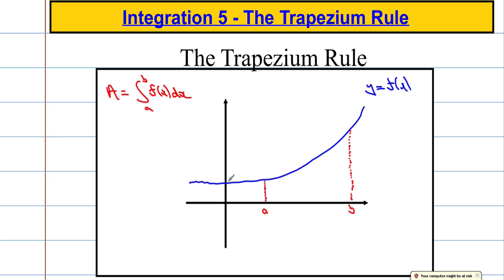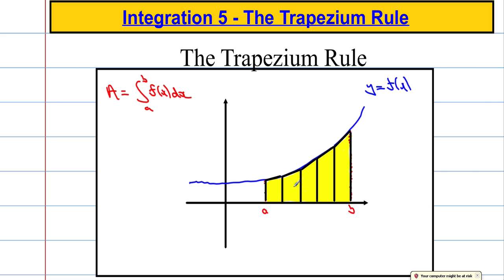Sometimes we're not able to integrate, so what we can do is approximate. We could split the area into a particular number of rectangles, work out the area of each rectangle, and add them together for a nice approximation. But even better than using rectangles, we can use trapeziums, which give a really close approximation for the area under the curve.